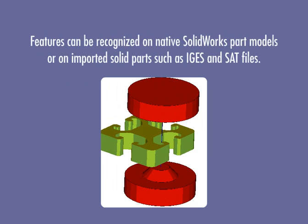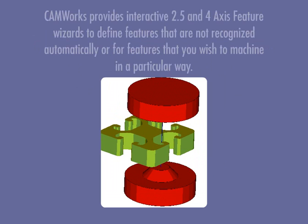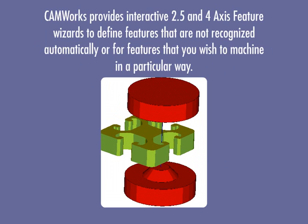Features can be recognized on native SOLIDWORKS part models or on imported solid parts such as IGES and SAT files. CamWorks provides interactive 2.5 and 4-axis feature wizards to define features that are not recognized automatically, or for features that you wish to machine in a particular way.